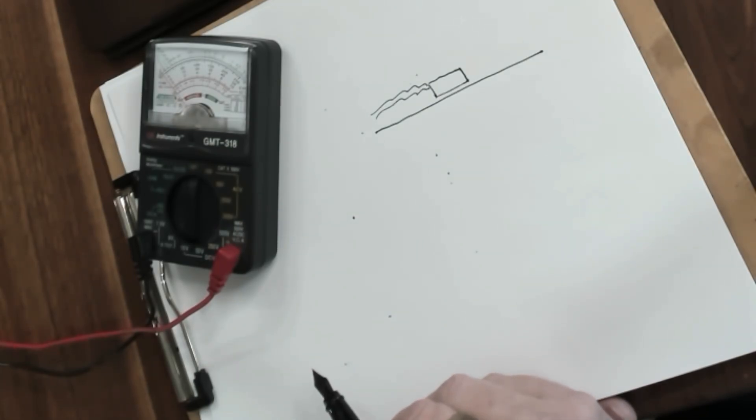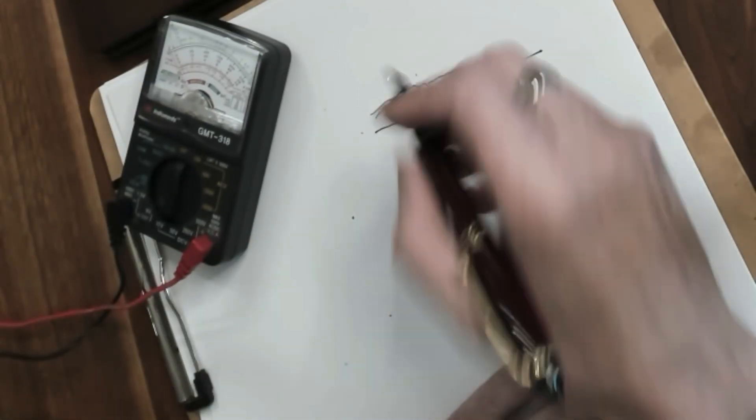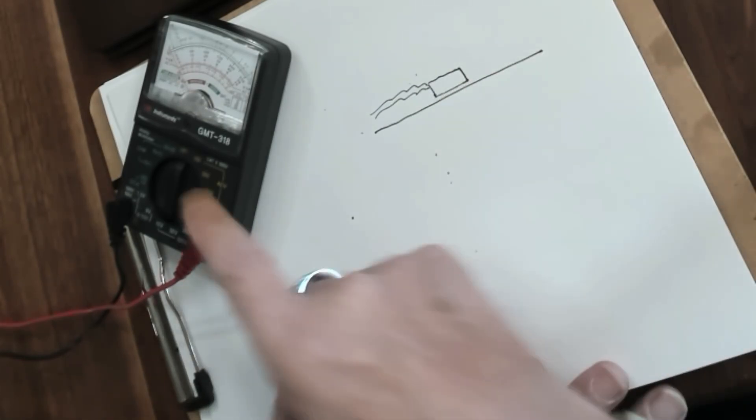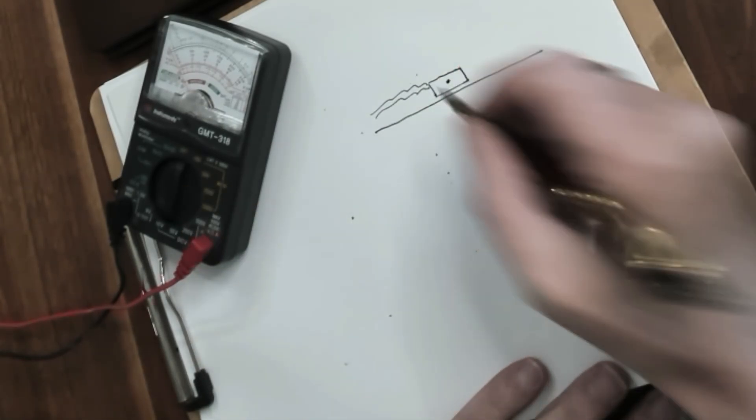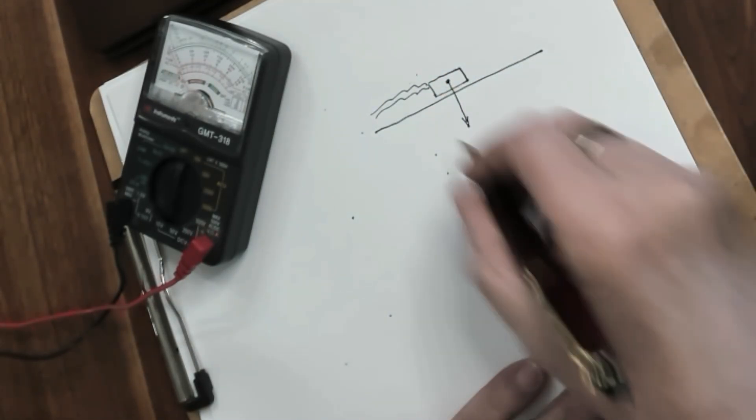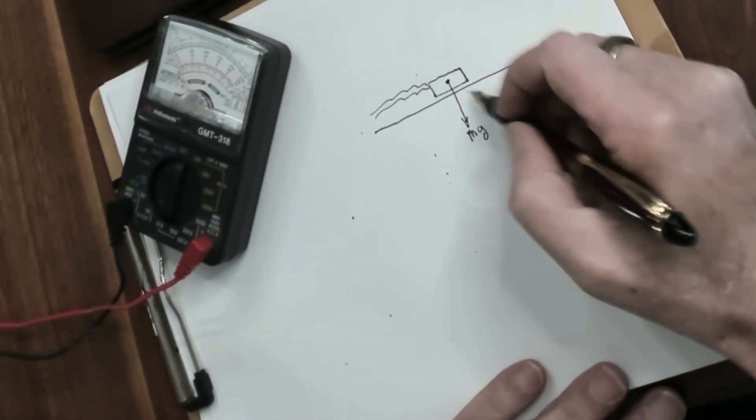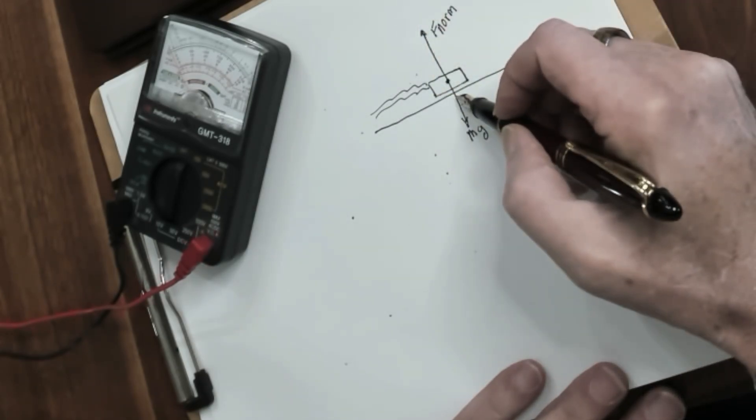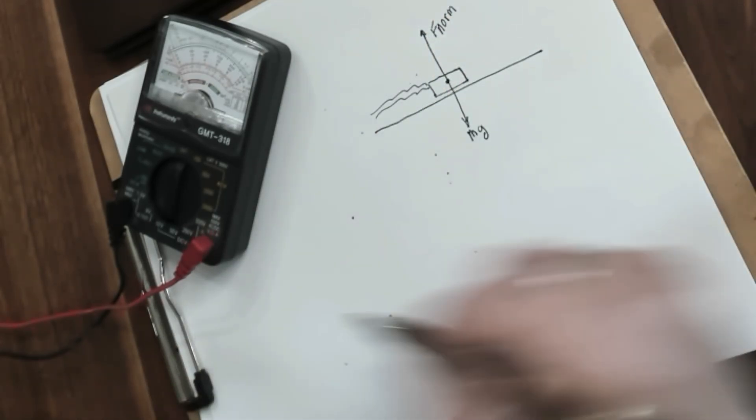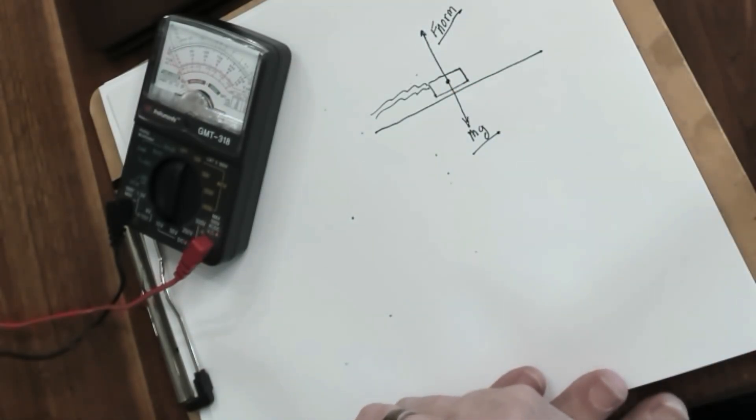On my desk here, I have a multimeter, and this multimeter has a certain amount of mass, and as you can see, it's subject to the forces of gravity. So let's go ahead and draw a diagram representing the forces acting on this object right now. So we've got the center of mass of the object, and we have the force of gravity pulling it down, and that is the mass times gravity. Now, the table is actually pushing up on the multimeter to prevent it from going further down towards the center of the Earth, and these two forces are equal to each other. In other words, they're in balance, and as a result, the object's not moving.